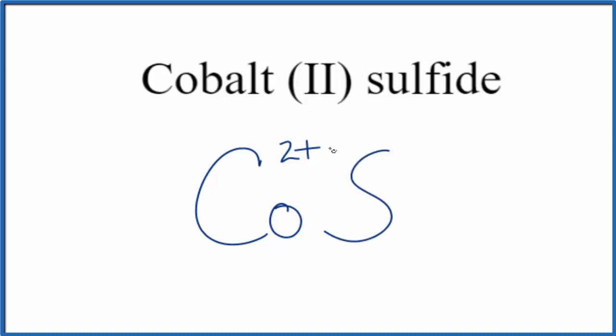Because we have this 2+ charge, we need to have that balance out and give us a net charge of zero, because cobalt (II) sulfide is a neutral compound—it doesn't say ion after it.